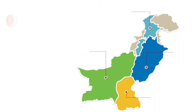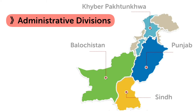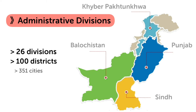The next one is administrative divisions of Pakistan. Pakistan has four provinces. The largest province by area is Balochistan, and the second is Punjab. Third is Sindh, and the fourth is KPK. KPK is the smallest province by area, and Balochistan is the smallest by population, whereas Punjab is the largest by population. In Pakistan there are about 26 divisions, 100 districts, and 351 cities, in which Karachi is the largest city both by area and population.